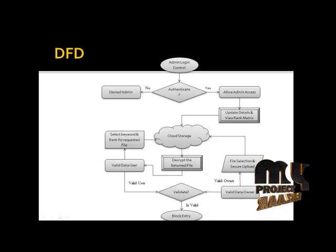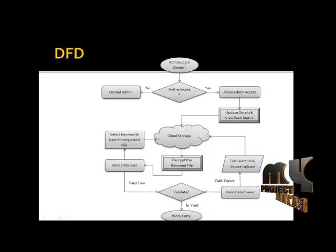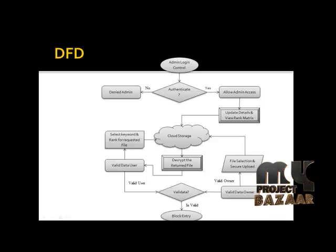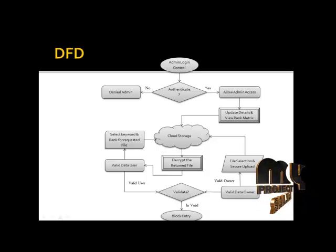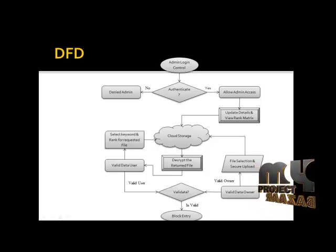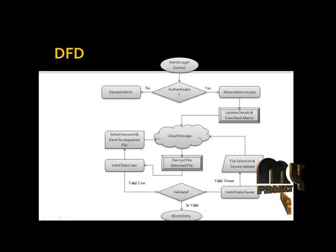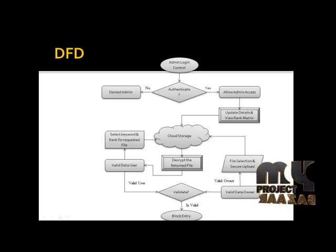After the data owner's upload, the data user enters the system using their registered username and password for authentication. Only a valid data user can then make a file request from the cloud. They select a keyword and a rank for a specified file, which is sent to the cloud storage for searching. Once the cloud finishes searching based on the keyword and rank, it returns a set of files in an encrypted manner.